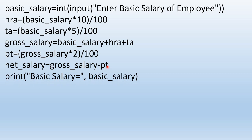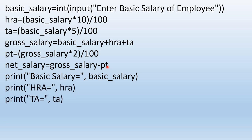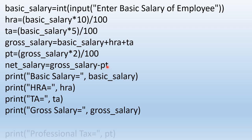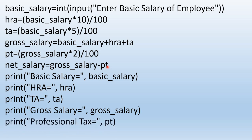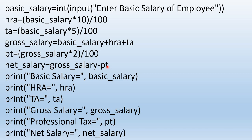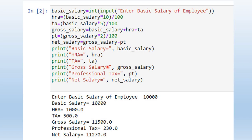The output shows: what is the basic salary of that employee, how much HRA he is getting, how much TA he is getting, what is his gross salary, how much professional tax he is paying, and what is the net salary he is getting. This Python program is written on Jupyter Notebook with all the output shown. This is our lab assignment number one, where we are calculating the net salary after all the deductions.